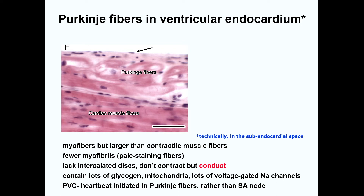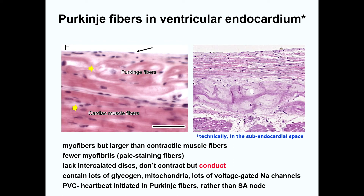So what do Purkinje fibers look like histologically? Here you can compare and contrast contracting cardiac muscle fibers with Purkinje fibers. The Purkinje fibers are found in the subendocardial space and are larger and paler than cardiomyocytes. They contain fewer myofibrils, lots of glycogen and mitochondria, and no T tubules. The cells are connected together by desmosomes and gap junctions in what are termed atypical intercalated discs, but they have many voltage-gated sodium channels. In this second micrograph, you can more clearly see differences in size and color of the Purkinje fibers, which is due to fewer myofibrils, a lack of organization of the myofibers, and the increased glycogen stores.